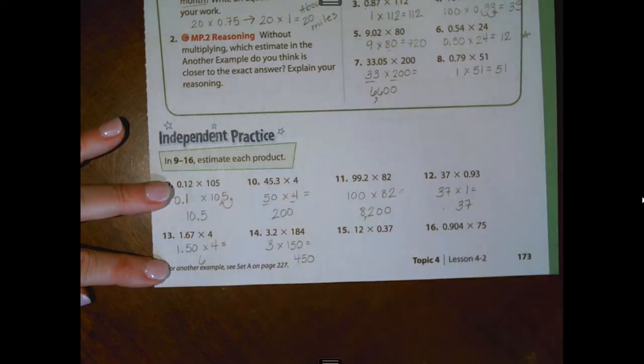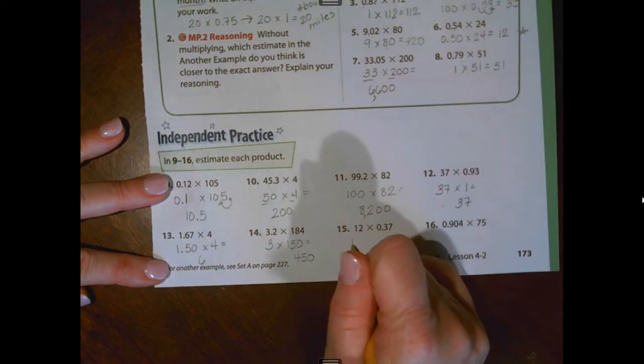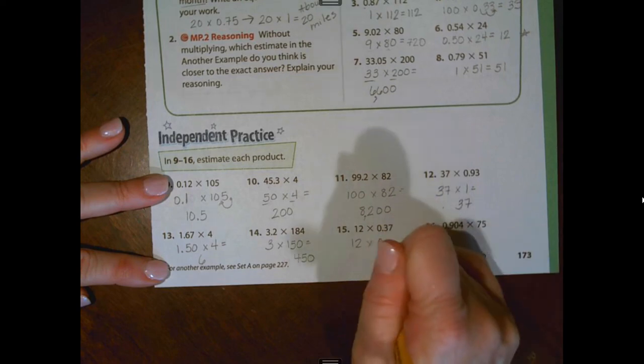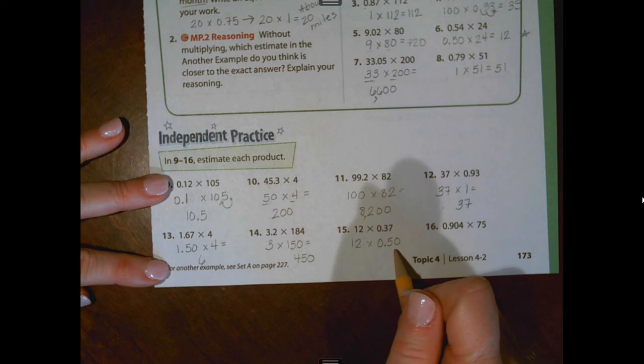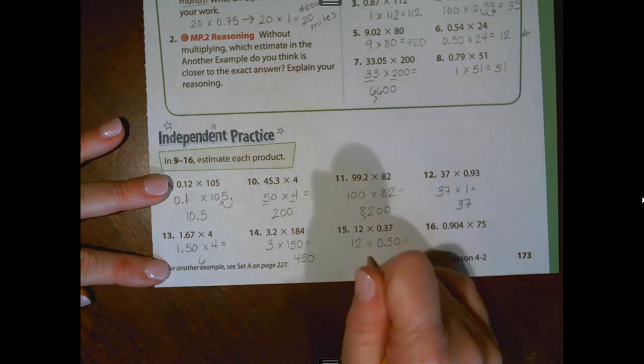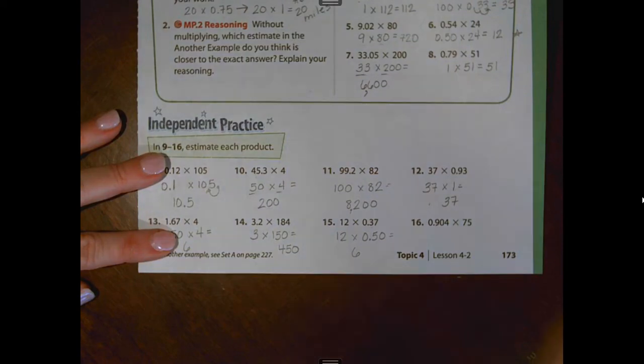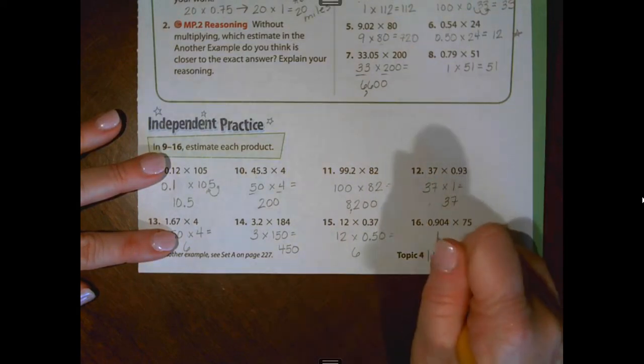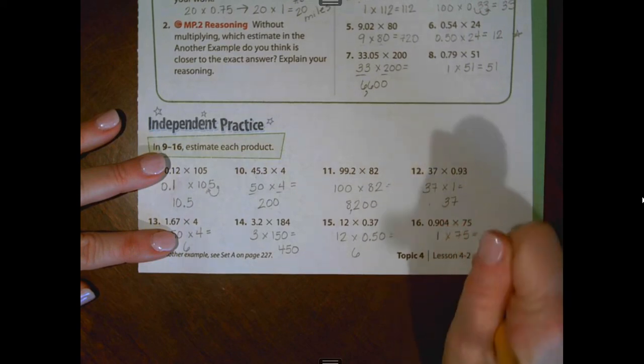This one right here, I'm going to treat a whole lot like we did number six. I'm going to leave this whole number 12. I'm going to use the compatible number 0.50. 0.50 is half and half of 12 is going to be six. And the last one we're going to look at is I'm going to round 0.904 to one whole and I'm going to keep 75 and I get an estimate of 75.